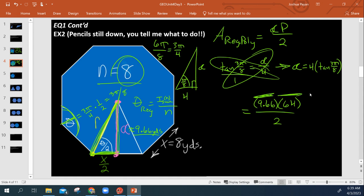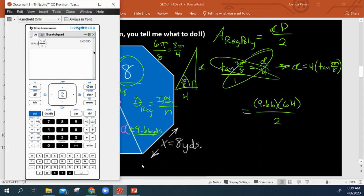So apothem times perimeter, all divided by 2. We throw that in the calculator, so control, divide. And, of course, I want to use the exact number, so I'm going to copy and paste that exact number. Perimeter was 64, all divided by 2.